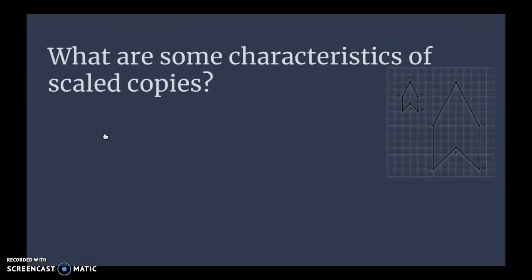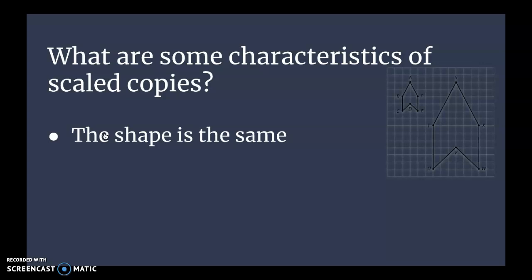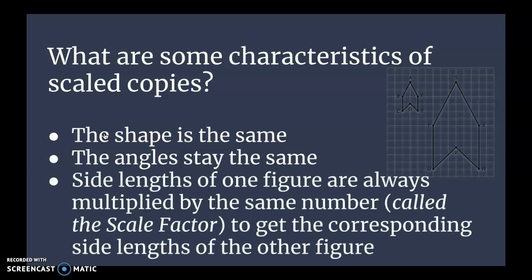Alright, I want you to ask yourself, what are some characteristics of scaled copies? By the end of today, you should be able to at least know these few things. 1. In scaled copies, the shape is always the same. 2. The angles are always the same. And then this is the big hard one: The side lengths of one figure are always multiplied by the same number, and that number is called the scale factor, to get the corresponding side lengths of the other figure. We'll work on that quite a bit more throughout this unit.